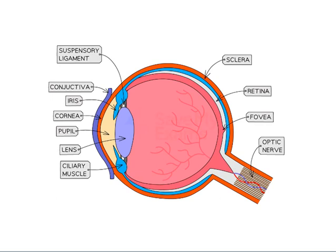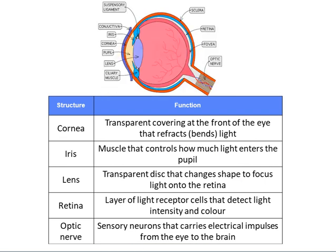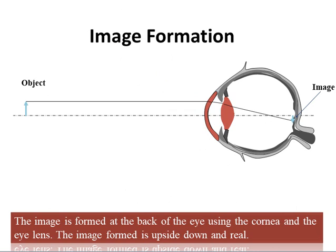Now let's discuss the main function of each part of the eye. The cornea is a transparent covering at the front of the eye that refracts or bends light. The iris is a muscle that controls how much light enters the pupil. The eye lens is a transparent disc that changes shape to focus light onto the retina. The retina is a layer of light-receptor cells that detect light intensity and color. The optic nerve includes sensory neurons that carry electrical impulses from the eyes to the brain.